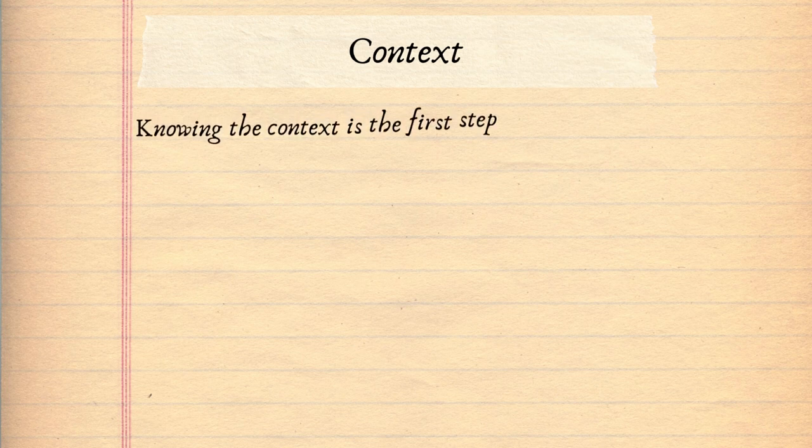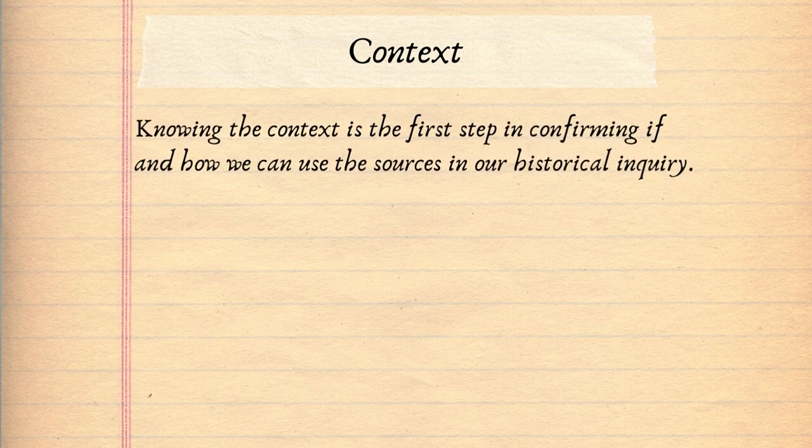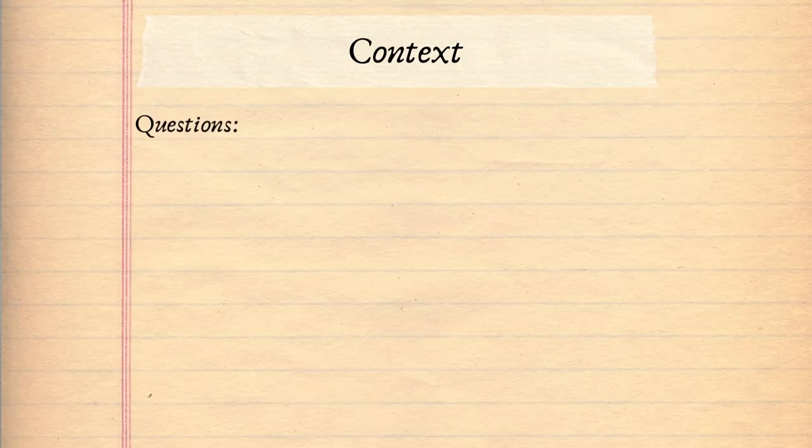When analysing historical sources and perspectives, we first want to understand their context. Knowing this context is the first step in confirming if and how we can use these sources in our historical inquiry. If the source is from the wrong time period or location, we'll know it probably isn't relevant to us. But if it does line up, it can be analysed as part of our inquiry. To find this out, we begin with some basic contextual questions.